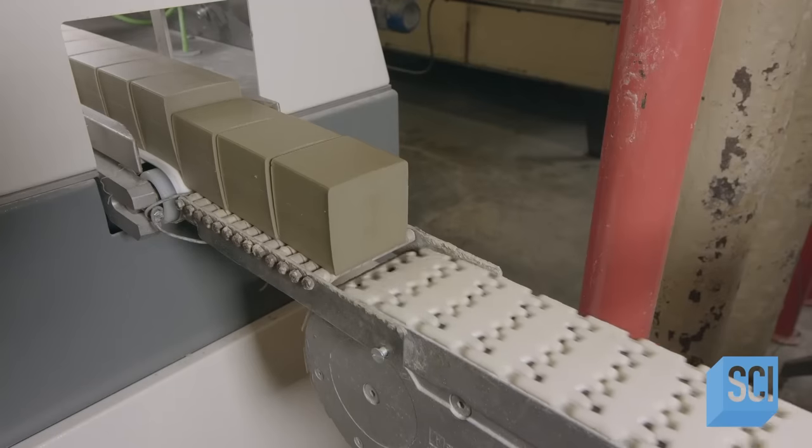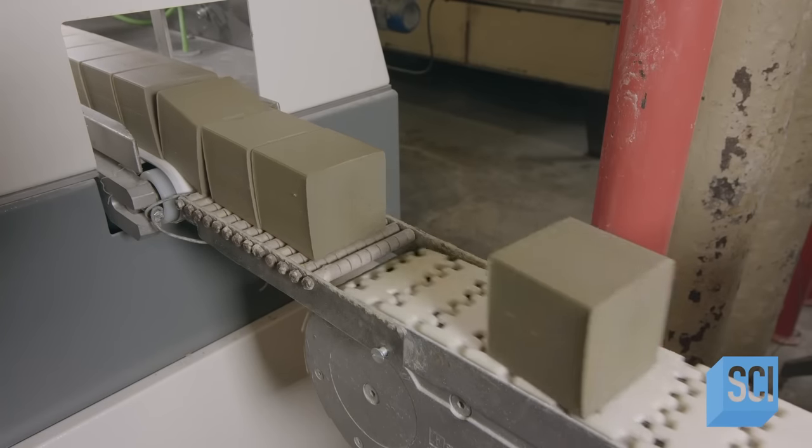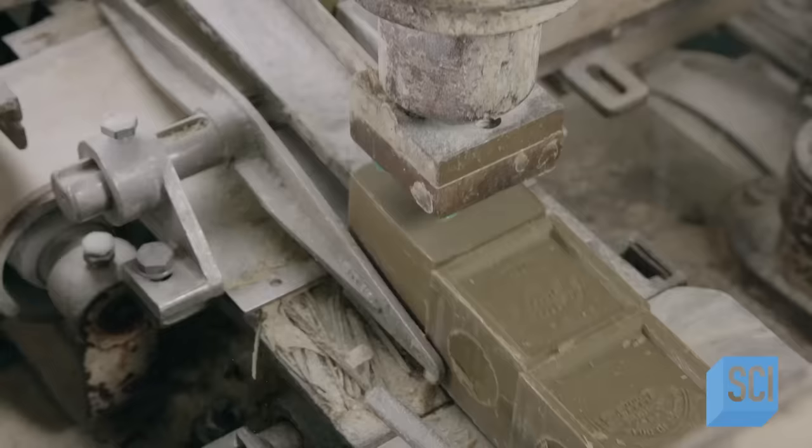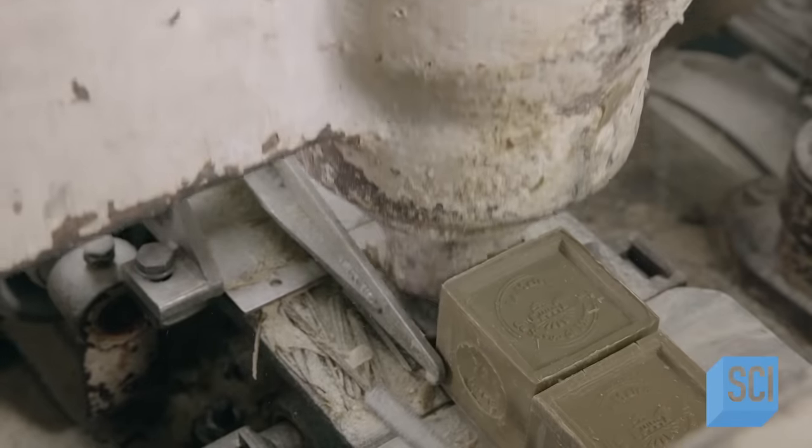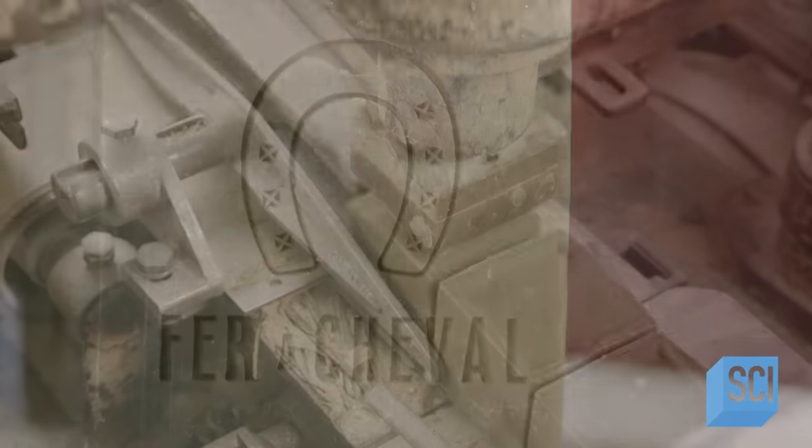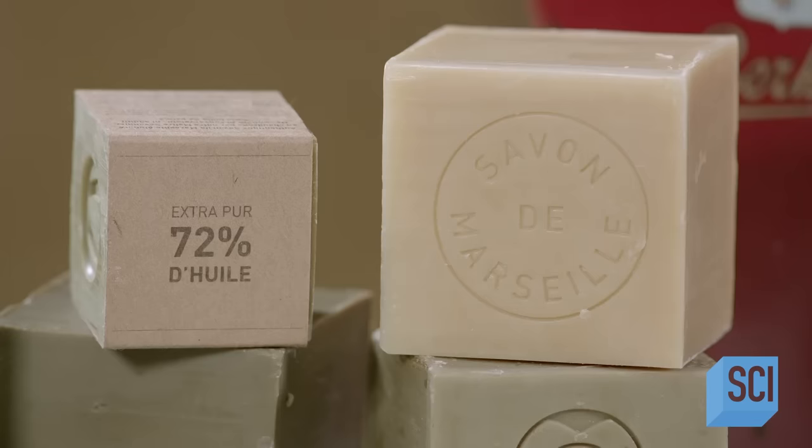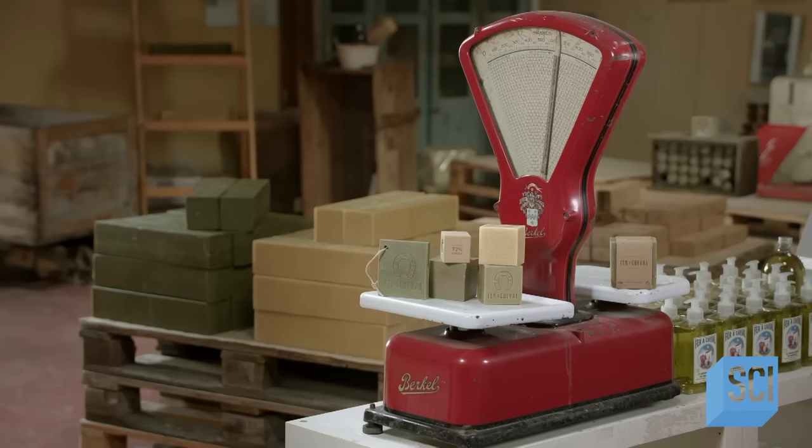The conveyor belt ferries the cubes to the stamping machine, which stamps all six sides. Each cube bears the company's name and logo, the soap's oil content, and the Savon de Marseille designation, attesting that this is indeed authentic, traditionally made Marseille soap.